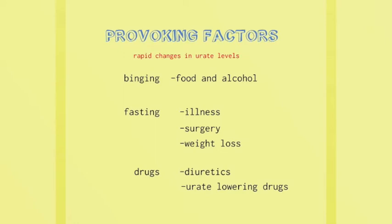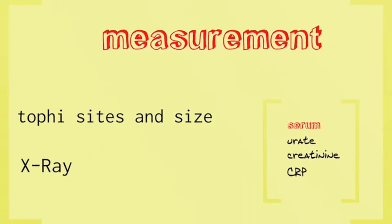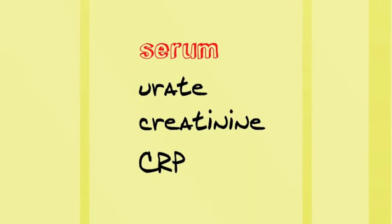When introducing uric acid-lowering drugs, one needs to introduce prophylaxis at the first visit. Subsequently, it's worth noting the sites and size of tophi, and sometimes it's worth x-raying the hands or feet to determine underlying bony damage from overlying tophi. At every visit, measure serum uric acid to know the background level at which you're treating the patient, creatinine levels to be aware of possible renal impairment affecting drug choice and dose, and CRP — because in patients with acute inflammation such as acute gout, the urate level in the blood will be low, and it's only when the CRP is normal that one can be sure the uric acid level represents the true uric status of the patient.